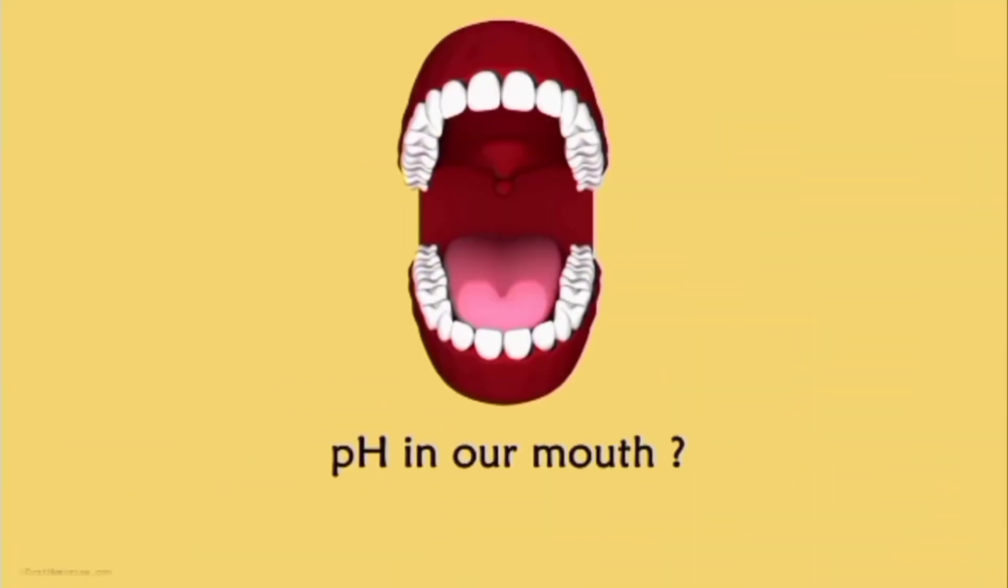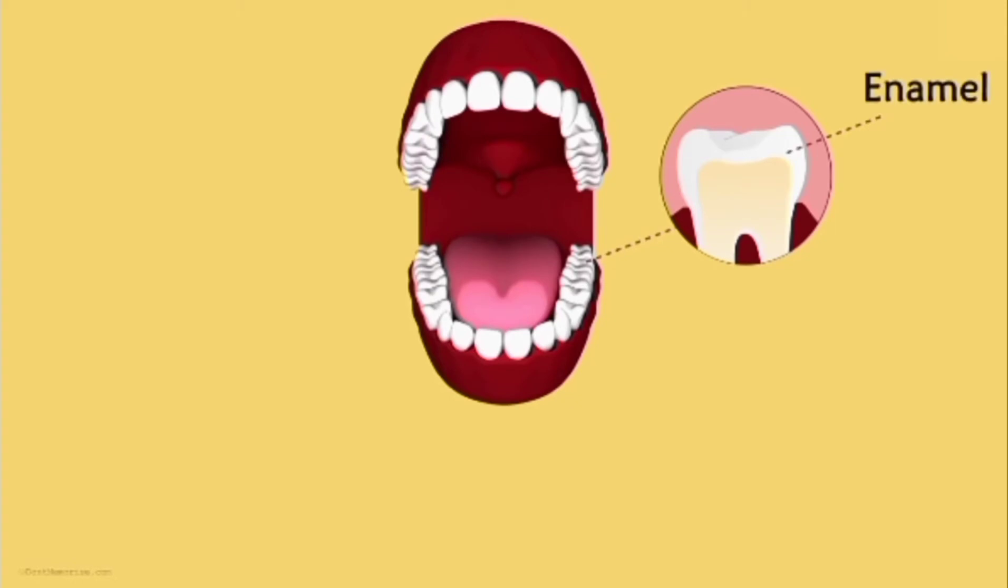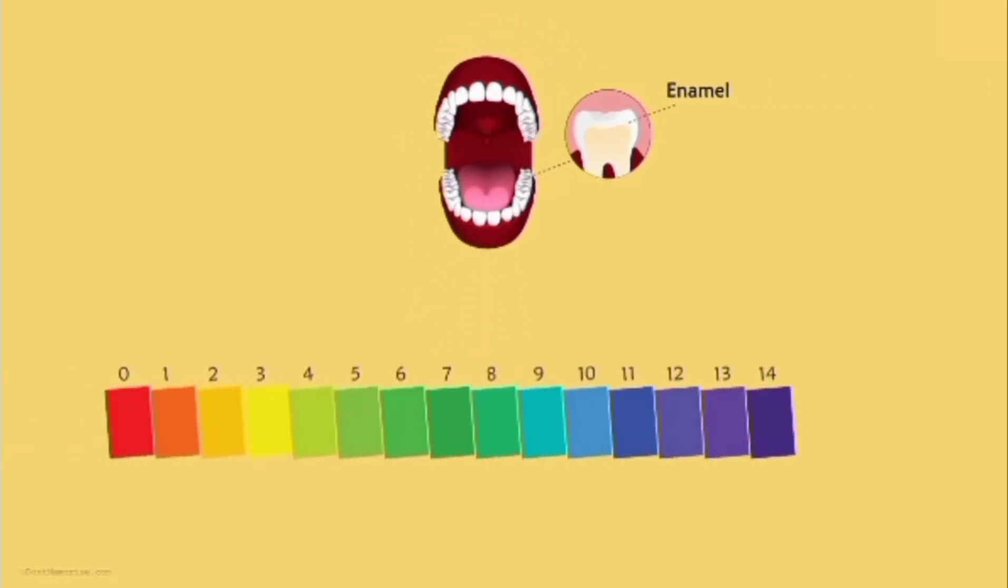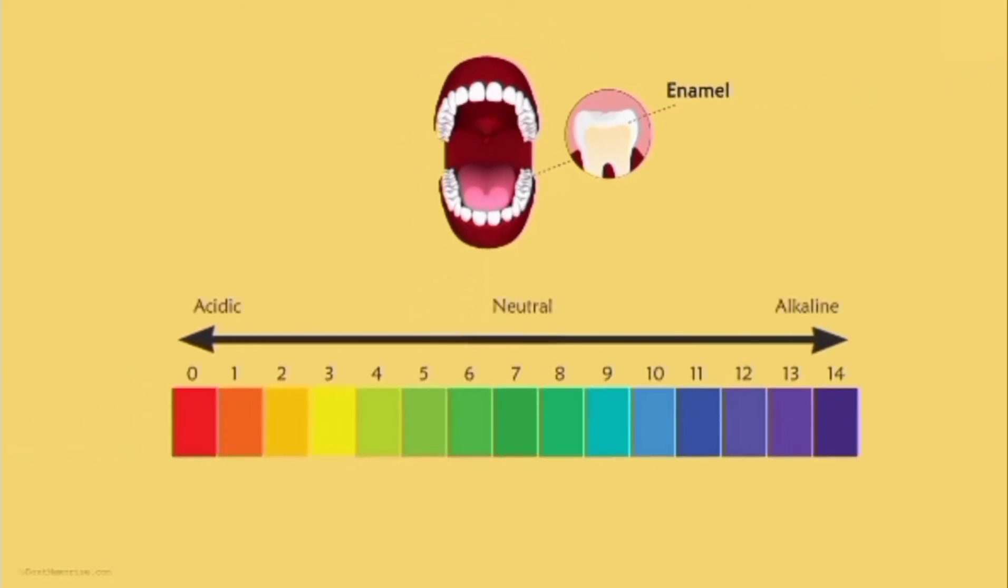What about pH in our mouth? Yes, the pH in our mouth also has an effect on our teeth. Tooth enamel is the hardest substance in our body and does not dissolve in water and mildly acidic solutions. However, it gets corroded slowly when the pH in the mouth falls below 5.5. But, how does the pH fall below 5.5?